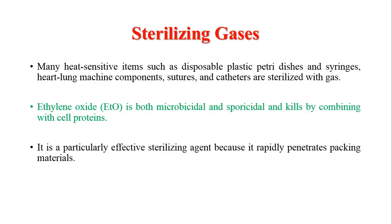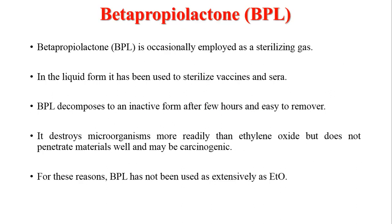The next category is sterilization gases. Many heat-sensitive compounds that cannot be sterilized by heating can be sterilized by gases. Ethylene oxide is a very important gas in this category. It has both microbicidal and sporicidal activity, killing microorganisms by combining with their cell proteins. It is a particularly effective sterilizing agent because it rapidly penetrates various types of packaging materials, even plastic sheets. The second gas is BPL, beta-propiolactone. BPL is occasionally employed as a sterilizing gas and in liquid form has been used to sterilize vaccines and serum. BPL decomposes to an inactive form after a few hours, making it easy to remove after use.